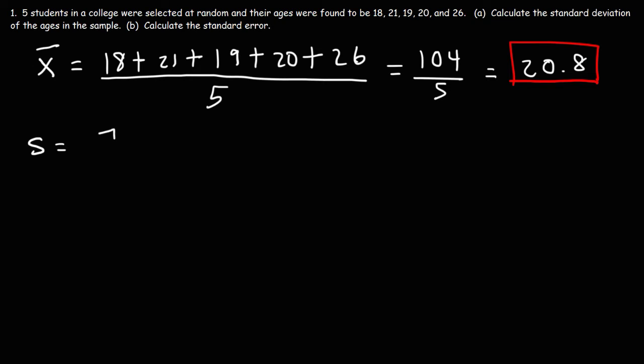And it's equal to the sum of all the differences between each value and the mean squared divided by n minus 1. And then the whole thing is inside of the square root symbol.